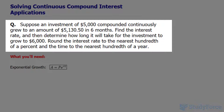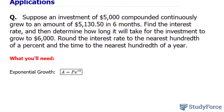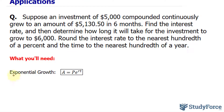Round the interest rate to the nearest hundredth of a percent and the time to the nearest hundredth of a year. To do this type of problem, we need to use the formula shown underneath, and this is what we use for exponential growth. Notice that the base of the exponential model is base E, and you use base E whenever you're looking at continuous compound interest.